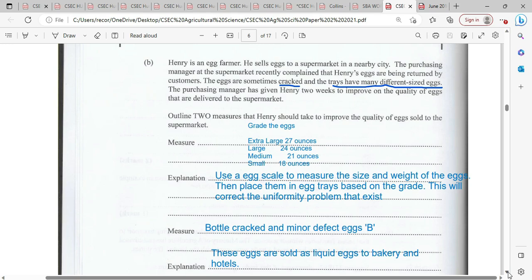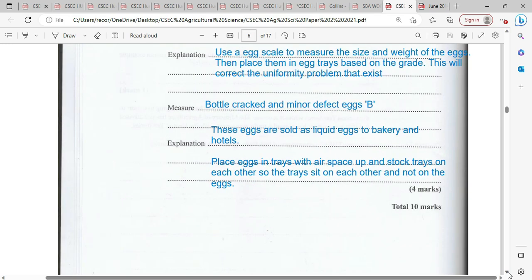Rather than have the eggs not being uniform, grade them and sell them at different prices, probably in different packaged containers. A third thing is that the eggs need to be placed in trays with the airspace up and stock trays on each other so that the trays sit on each other and not on the eggs. If eggs are not packed properly, then the weight will naturally damage some of the eggs.